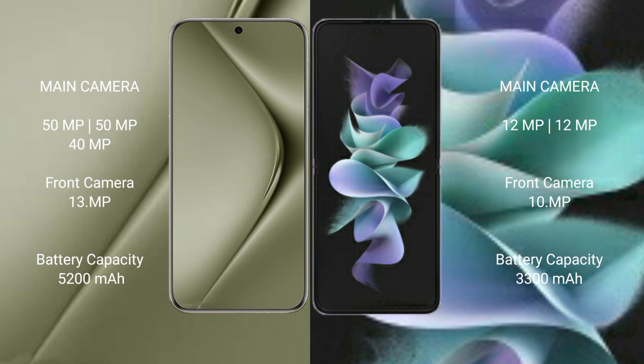The Wahabepura 70 Ultra has a 13MP front camera. The Samsung Galaxy Z Flip 3 features a dual camera setup of 12MP plus 12MP, with a 12MP front camera. The Wahabepura 70 Ultra has a 5200mAh battery with 100W fast charging support, while the Samsung Galaxy Z Flip 3 has a 3300mAh battery with 15W fast charging support.